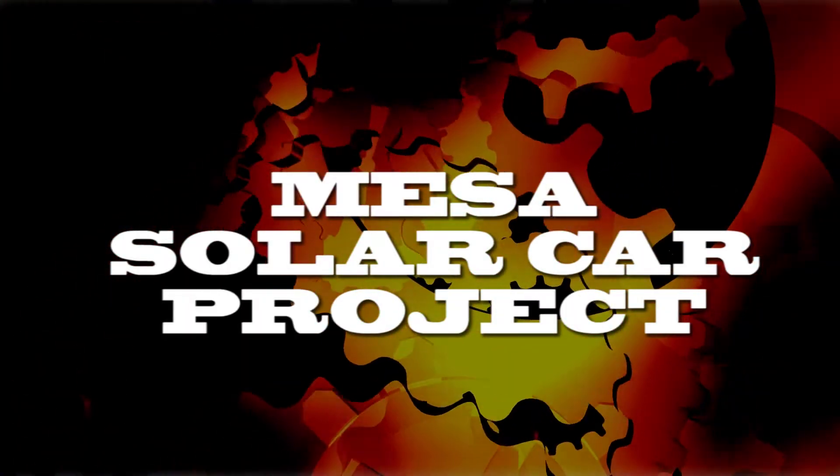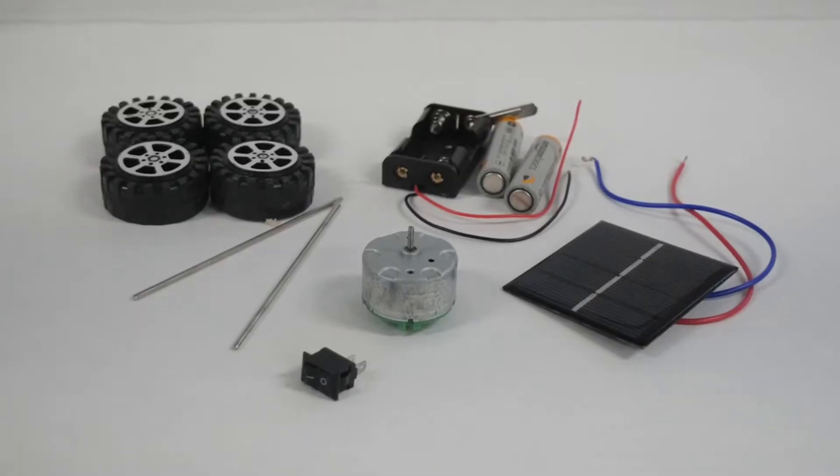Welcome to the MESA Solar Car project. You will be provided with the following components to build your project: a solar panel with two leads or wires, a battery adapter with two leads, a small engine which will be powered from the solar panel or batteries, an on-off switch, two axles, four wheels, and two AA batteries.